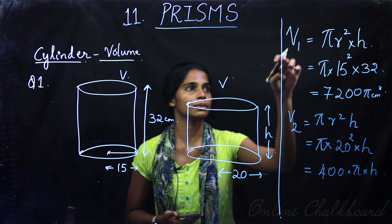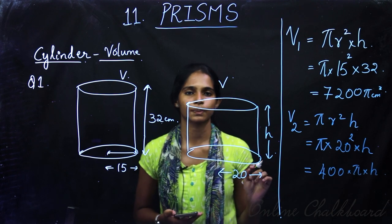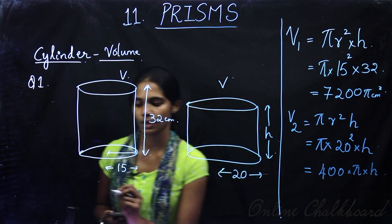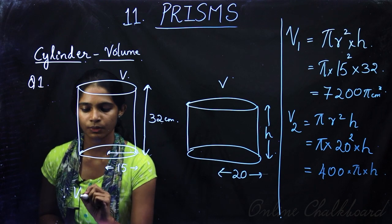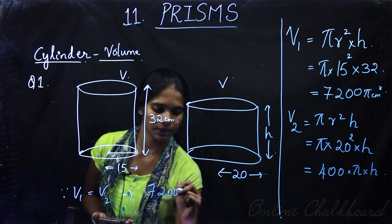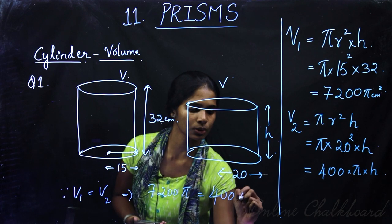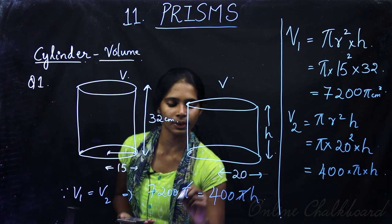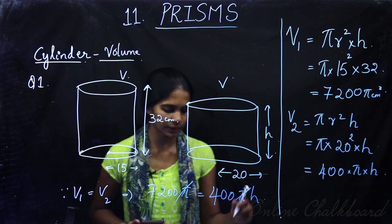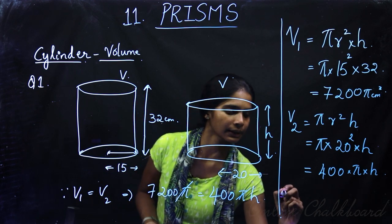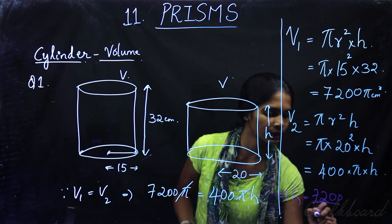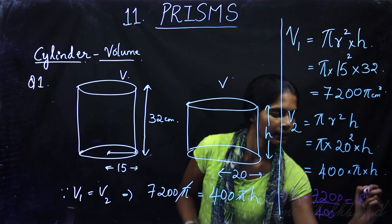We know that the two volumes are the same, so V1 equals V2. This implies 7200π equals 400πh. Cancelling π from both sides, and dividing, the height h equals 7200 divided by 400, which equals 18 centimeters.